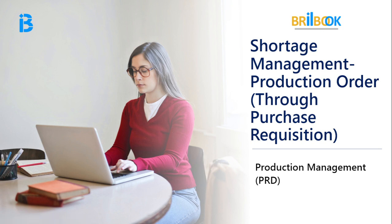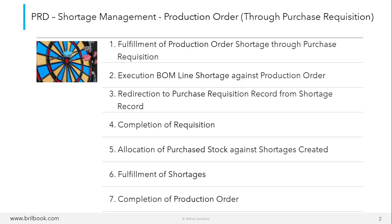Hello everyone, welcome to Brilbook. In this video, we will have a look at Shortage Management Production Order through Purchase Requisition. We will cover the following topics: Fulfillment of Production Order Shortage through Purchase Requisition, Execution BOM Line Shortage against Production Order, Redirection to Purchase Requisition Record from Shortage Record, Completion of Requisition, Allocation of Purchase Stock against Shortages Created, Fulfillment of Shortages, and Completion of Production Order.